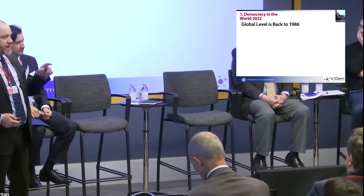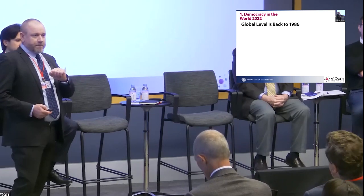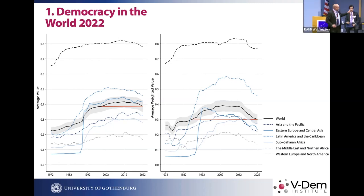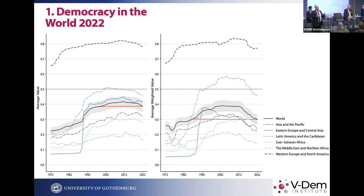1986 was the year Ronald Reagan met Gorbachev in Reykjavik to discuss the end of the Cold War. On the left side of the graph is the world average — the black line in the middle — with different regions shown. On the right side, country averages are weighted by population size. Seychelles with 90,000 inhabitants gets the same weight as India with 1.4 billion on the left. Drawing a red line back to 1986 shows drastic change.